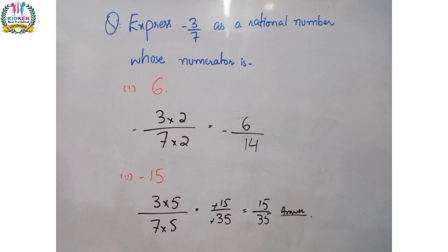The next question is: express minus 3 upon 7 as a Rational Number whose new numerator is 6. Simply multiply by a number that converts the numerator to 6. Our equation is minus 3 upon 7, and we can write 3 multiplied by 2 equals 6. So we multiply both numerator and denominator by 2: minus 3 multiplied by 2 upon 7 multiplied by 2, giving us minus 6 upon 14.